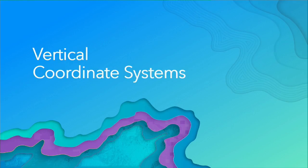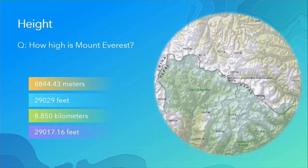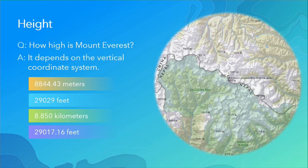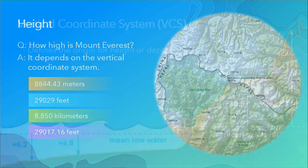Now we get to vertical coordinate systems. For example, how high is Mount Everest? We can say it's 8844 meters, or 29,029 feet, etc. Again, it depends on the vertical coordinate system being used.